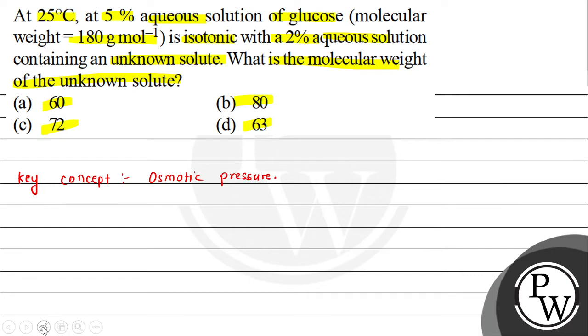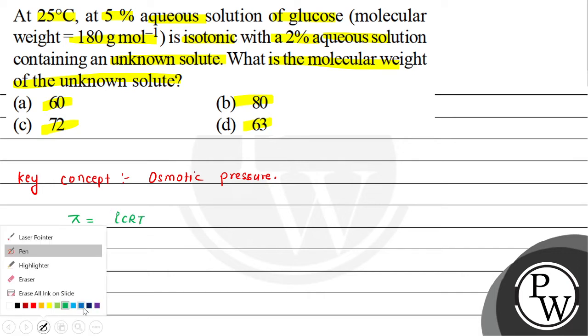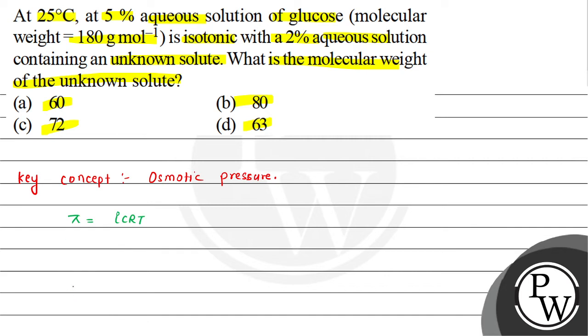What is osmotic pressure? We have osmotic pressure π equals ICRT. Here I is van't Hoff factor, C is concentration, R is the universal gas constant, and T is temperature.